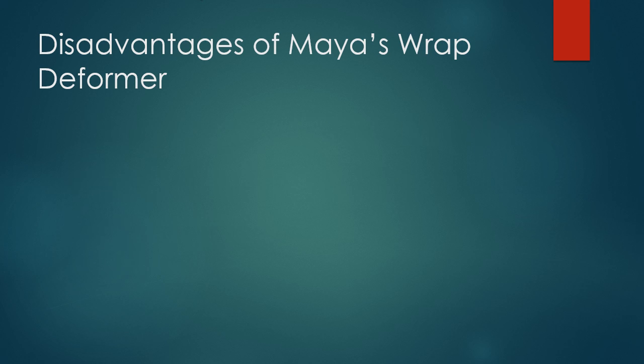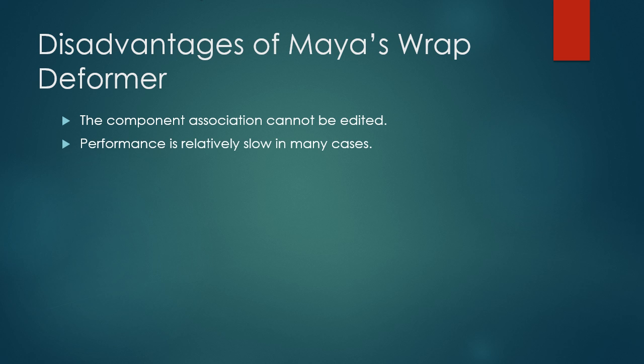The question is why would we want to write our own wrap deformer when Maya ships with one? I've listed here a few of the disadvantages of using Maya's built-in wrap deformer. One is that we cannot edit the vertex association that wrap deformers use. For example, if we want a portion of a mesh to be driven by another portion of a mesh, there's no way to edit that using Maya's built-in wrap deformer.